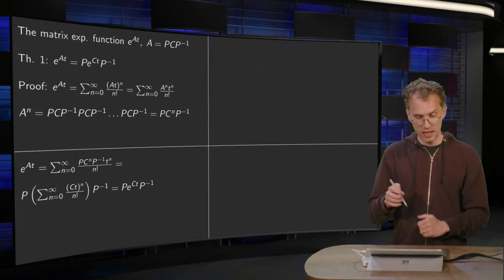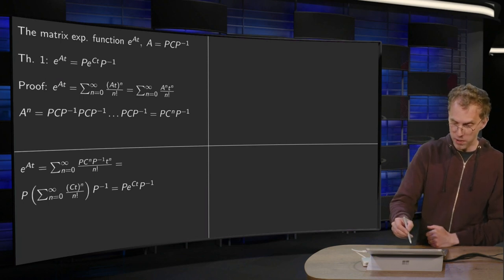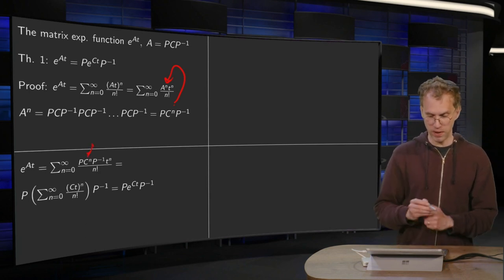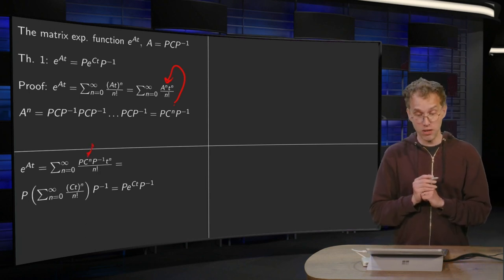So for e to the power at, we plug in this P c to the power P inverse over there. So we get a P c to the power n, P inverse times t to the power n.